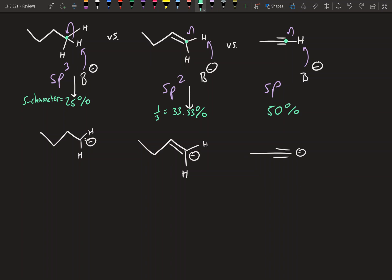Acidity is going to be increasing with more s character. Going from sp3 to sp2 to sp, sp is going to be more acidic than sp2 and sp3, and sp2 will be more acidic than sp3.